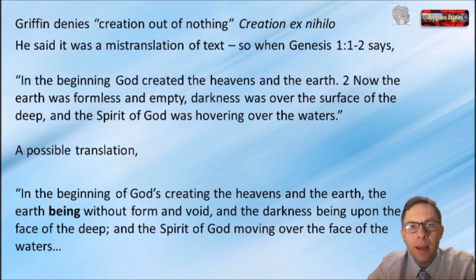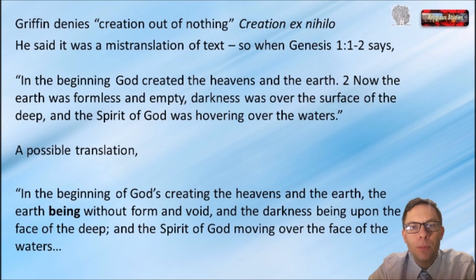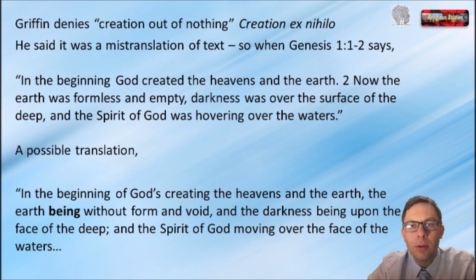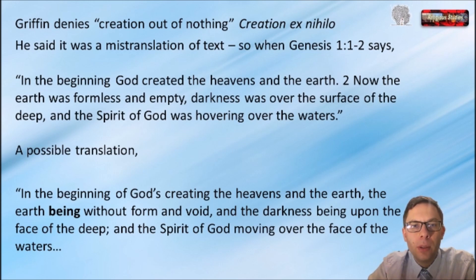Griffin's suggested translation reads: 'In the beginning of God's creating the heavens and the earth — the earth being without form and void, and the darkness being upon the face of the deep, and the Spirit of God moving over the face of the waters.' The key phrase is 'in the beginning of God's creating' — God isn't creating the heavens and the earth from nothing; they already exist, without form, in a void. There's a chaos which God moulds and brings together, then pushes creation into the world that we're in now. Whitehead wrote between 1861 and 1947, and process theology stems from this work, so Griffin is building on an established idea.